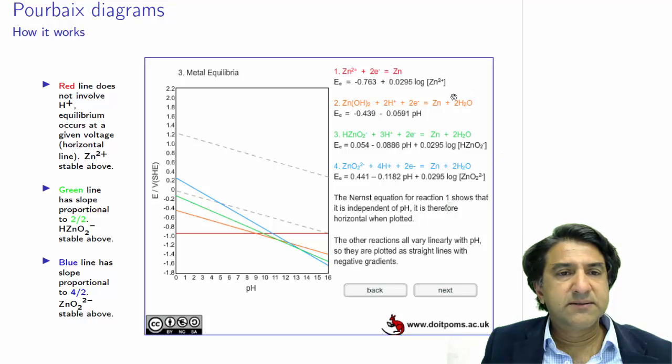The red line is the simple case of zinc cation reducing to zinc, so 0.763 would be the standard electrochemical potential at one molar for Zn2+.